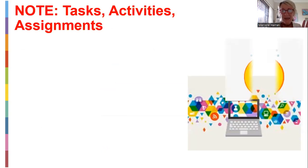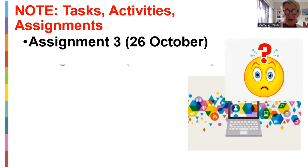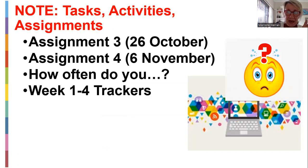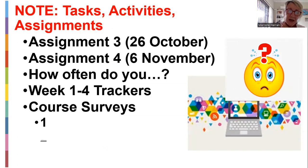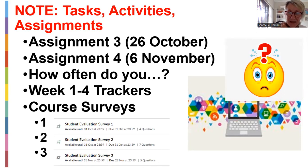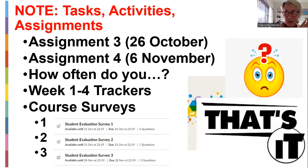Just a quick roundup of task activities and assignments: assignment three comes in tomorrow night, assignment four comes in the 6th of November. There are two mentees you can go and look at — how often do you read your feedback, and how often do you watch the canned and Zoom recordings? Next week from the 31st of October, I will open up weeks one to four trackers for those of you that never got to do them. Course surveys from Studio one, two and three have been put on Canvas and activated — I think they're under assignments. You've got until the end of the month to finish them. Please just go and do them. You can have your say.